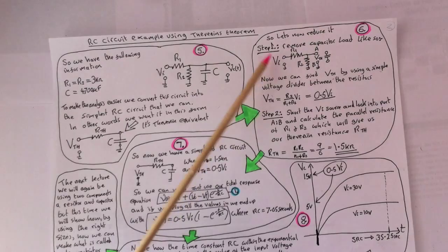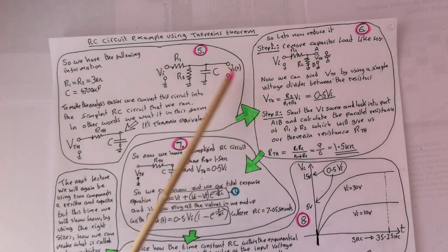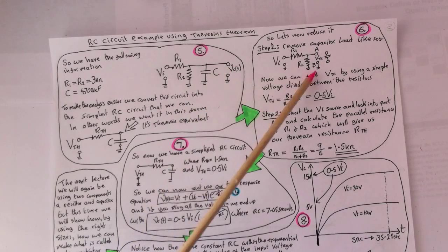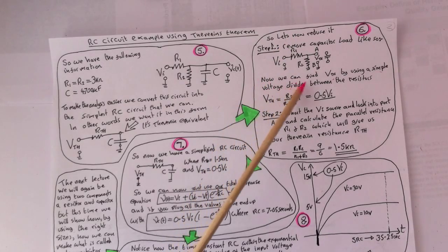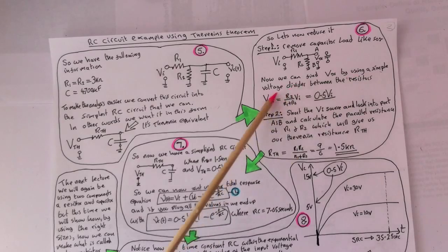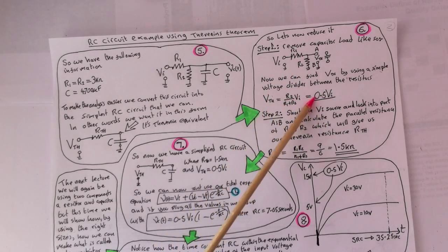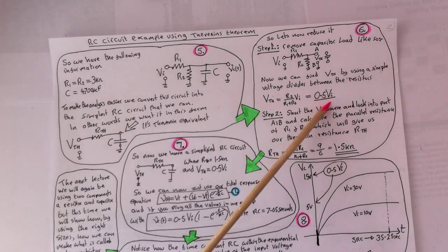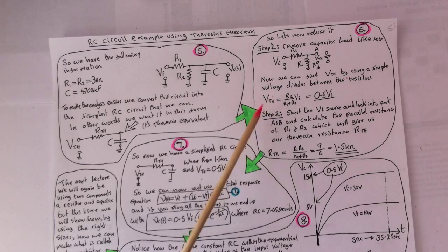So let's now reduce it. Step one to reduce this equation, remove the capacitor. So we're going to remove the capacitor like so. Now we can find the Thevenin voltage VTH by using a simple voltage divider between the two resistors. And when we plug the numbers in, we'll find that that is equal to 0.5 of the input voltage. So now we've got the Thevenin voltage.